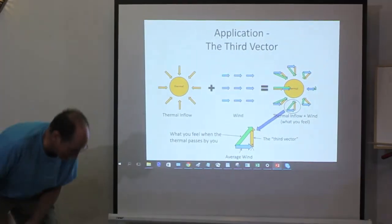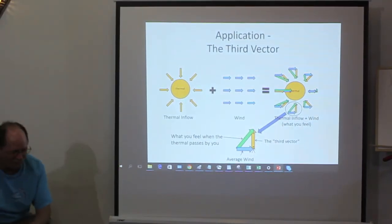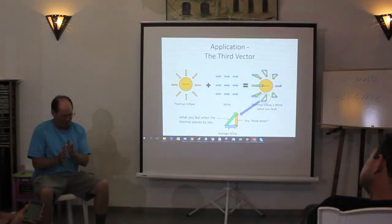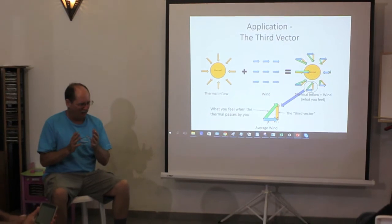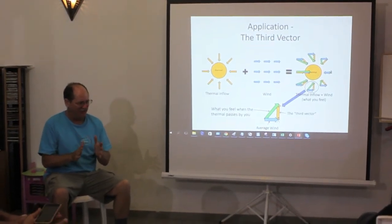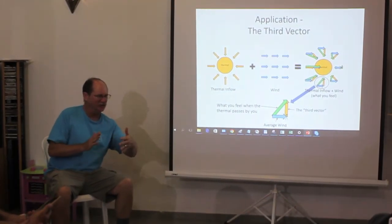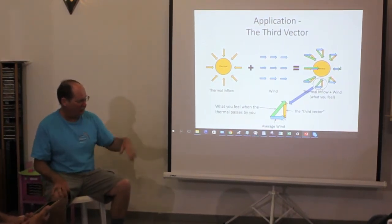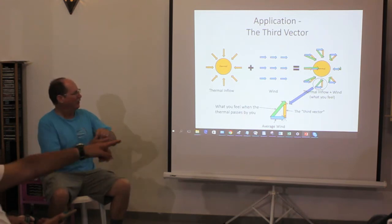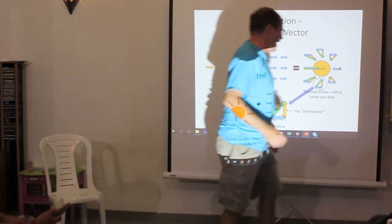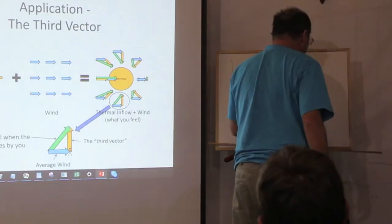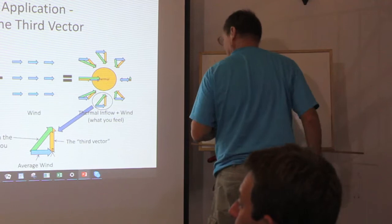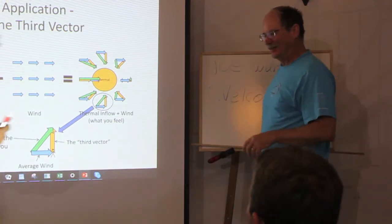Well, the challenge is one of the things that happens is, let's say you have the average wind and the velocity actually didn't change but the wind direction changed. So using the third vector approach, I kind of wish I had a stick there.